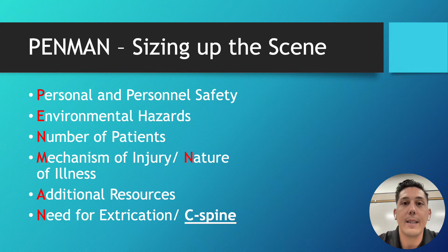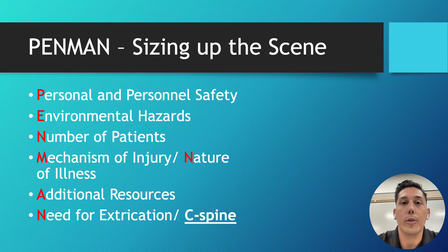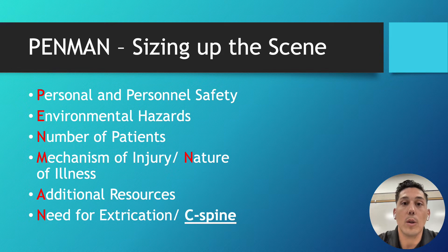Environmental hazards — that's anything in the environment that can hurt or kill us. That's going to be any downed trees, large bodies of water, electrical lines, any animals, or potential human threats as well.